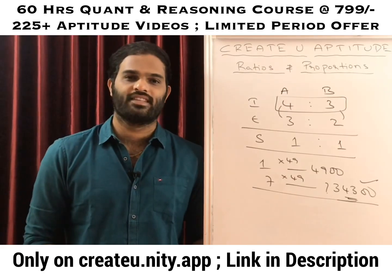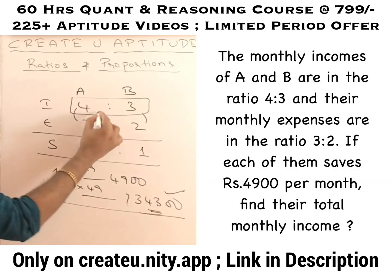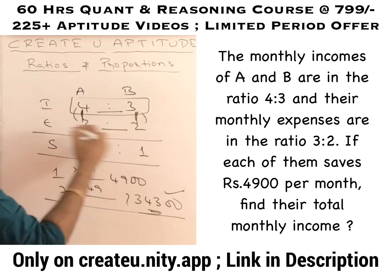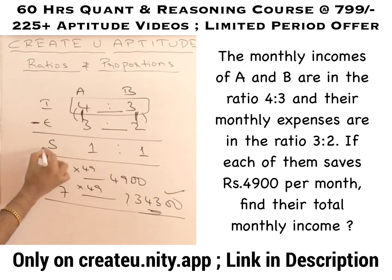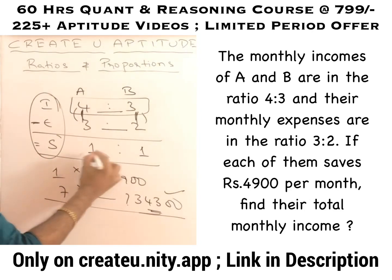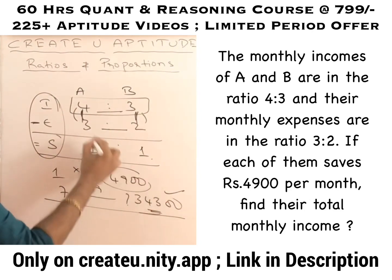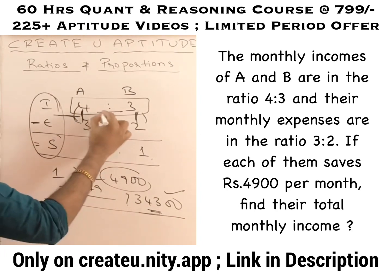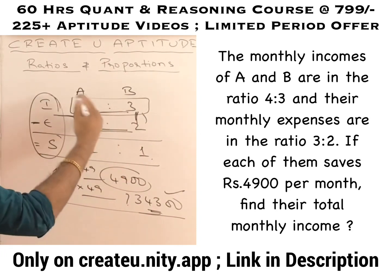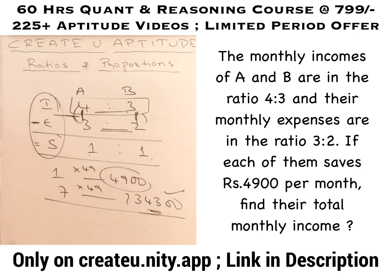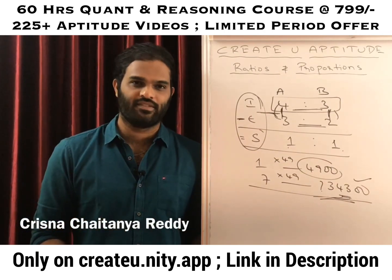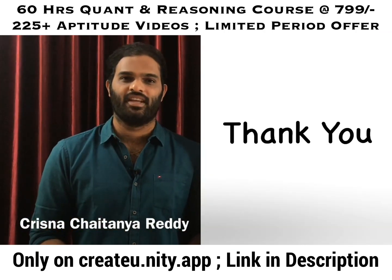The key point is: income minus expenditure equals saving. To make savings equal, the differences in ratios must be equal. If they are not equal, multiply by the appropriate number to make them equal; if they are already equal, leave them as such and you will get your answer. These questions are as simple as this. Let us solve more varieties of questions in the next video. Thank you so much. I am Krishna Jaitanya Reddy. Bye, see you next week.